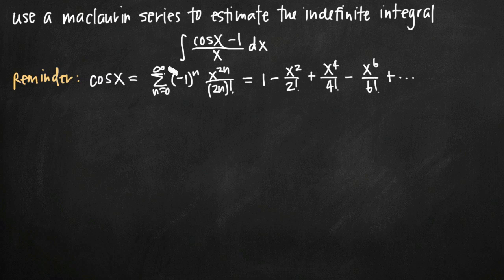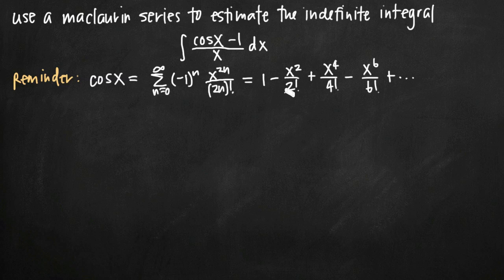If you don't have this Maclaurin series representation or you don't have the first several terms of the series, no problem. You can always come up with it on your own. To find the Maclaurin series, we start with cosine of x, then take the first derivative, second derivative, third derivative, etc. We put this all in a table and evaluate each of the derivatives and the original function about the point a equals 0. We divide those by n factorial values to get the first several terms of the series, and from those terms we can derive the Maclaurin series representation.